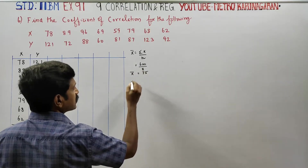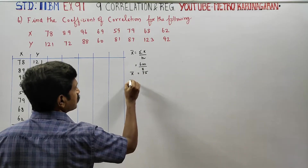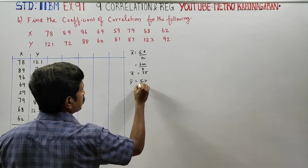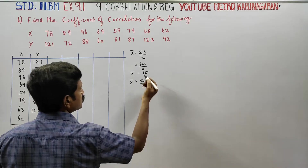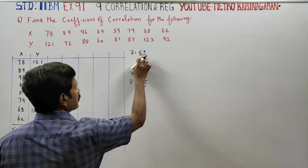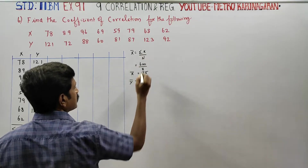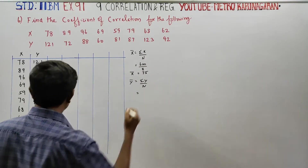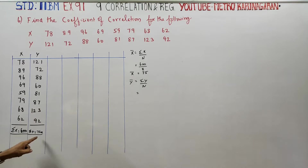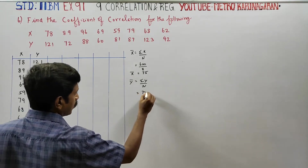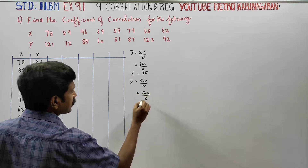Now for Ȳ, try Sigma Y by N. Sigma Y is 724, divided by N which is 8. So Ȳ equals 724 by 8.